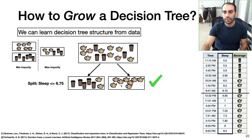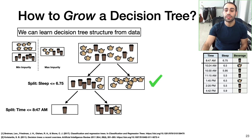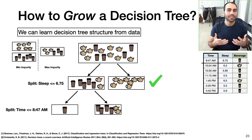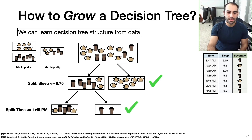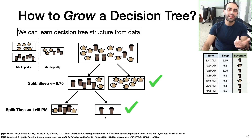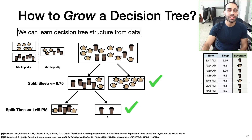Notice this node over here is pure — it has minimum impurity, so it doesn't make sense to split it further. But on the left-hand side we still have some impurity and can do additional splits. With a smaller subset of the data, we repeat the same process. Say we discover that splitting on time less than or equal to 1:45 p.m. gives the smallest Gini impurity. We can keep splitting the data until every single node is pure — meaning every node has just a single class and Gini impurity equal to zero.